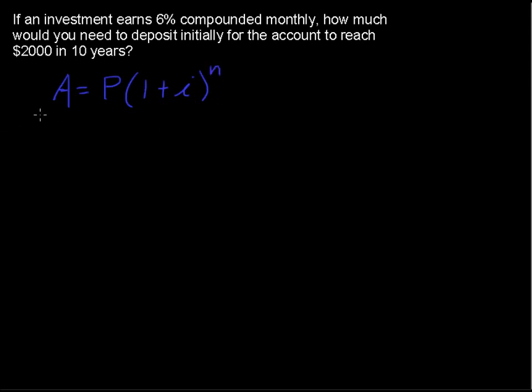So real quickly, this A, the capital A, is the ending amount. So I'll write that down so you can refer to that. And P is the initial principal, or the initial amount. So that is what we're going to be solving for, this P, because it says how much would you need to deposit initially.